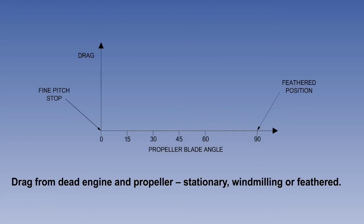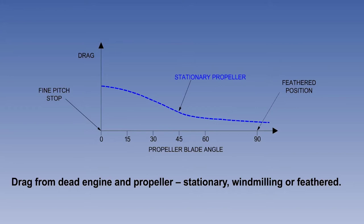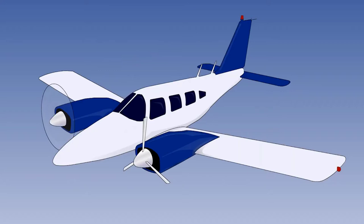The drag from the propeller itself will depend on whether it is stationary, windmilling, or feathered, but there will always be some contribution to the yawing moment. If the propeller is stationary, it is generating some drag from the blades, which could be at a relatively large angle to the airflow, but no torque. A windmilling propeller will produce a large amount of drag, being driven by the relative airflow, generating both drag and torque. The propeller will also have the load of turning the dead engine unless an automatic decoupling device is fitted. A feathered propeller will cause the least possible drag — there is no torque since it is not rotating, and the parasite drag is at a minimum, with the blade's edge onto the airflow.